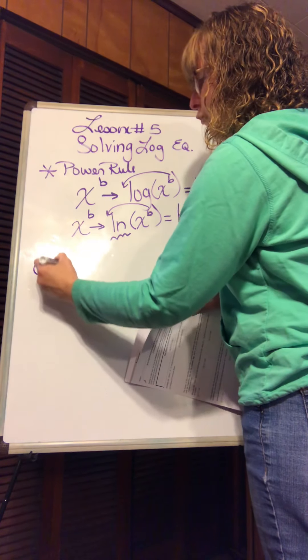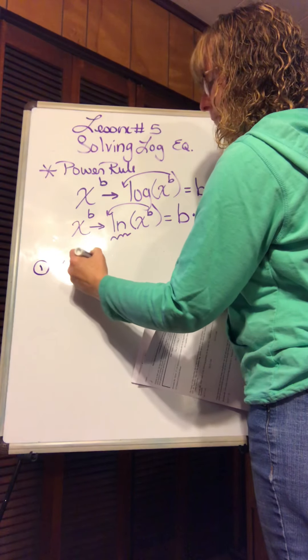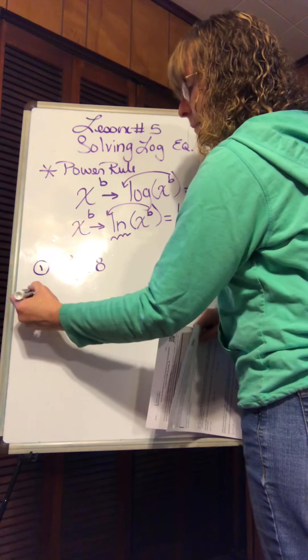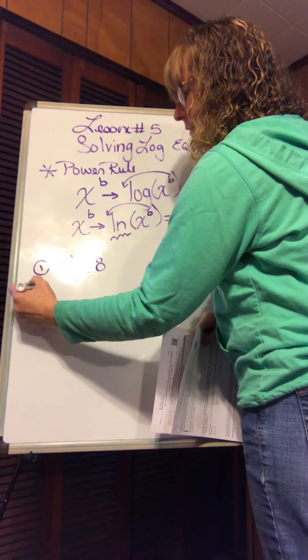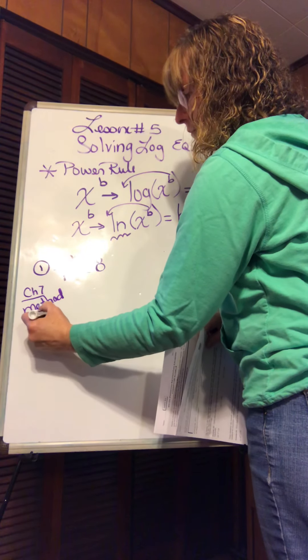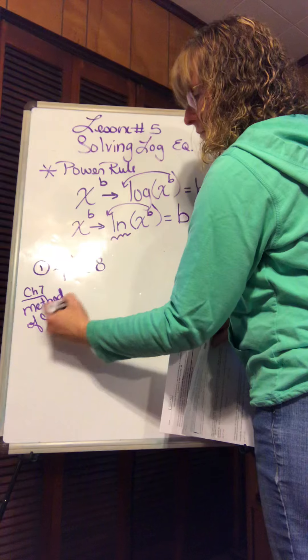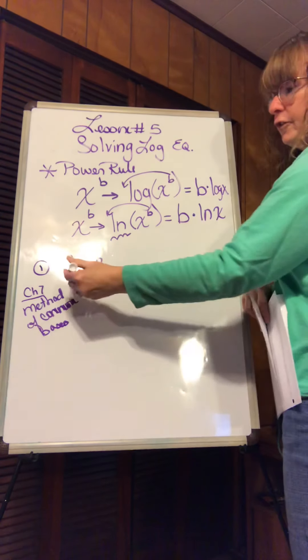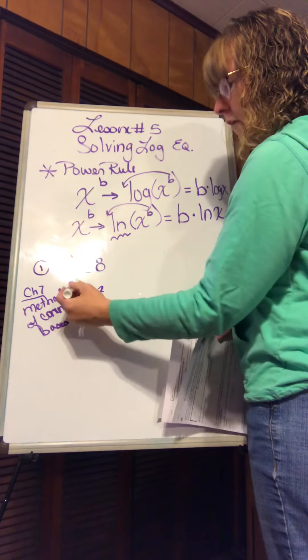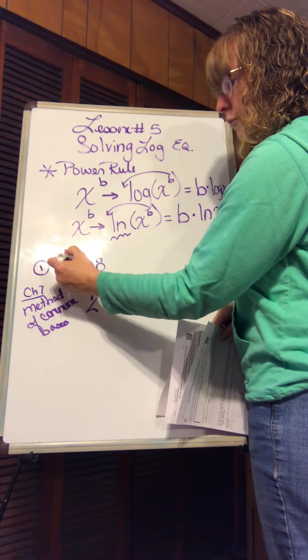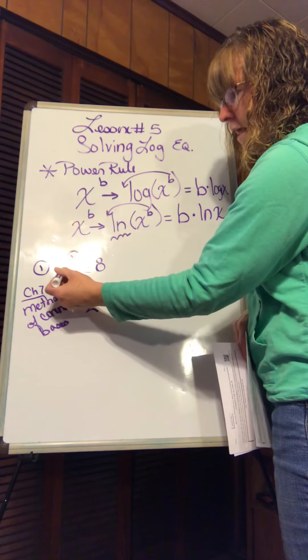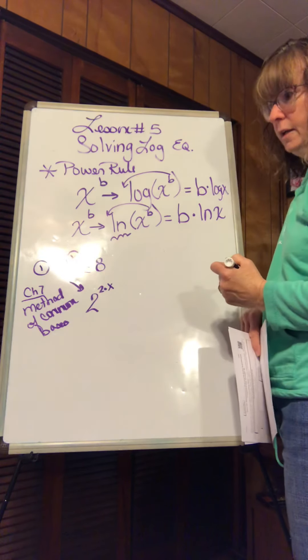Exercise 1 has 4 to the x is equal to 8. If we go back to chapter 7, that's the method of common basis. Here's the 4, change it out for me. 4 is the same as 2 squared, but don't forget that there was also this x. So that means power rule. You now have an exponent raised to a power, multiplication.